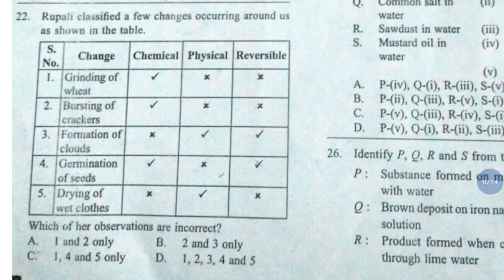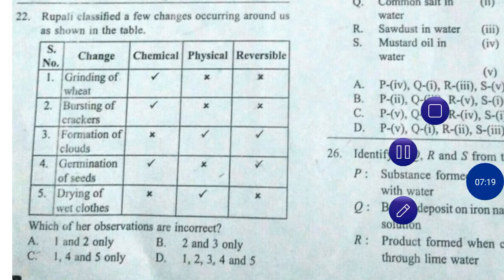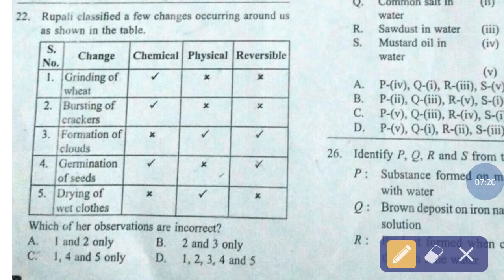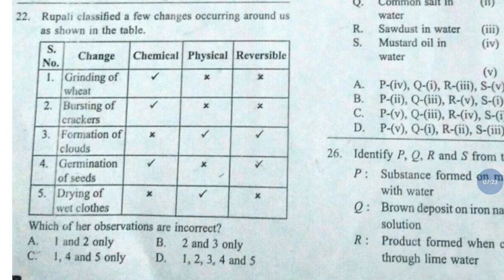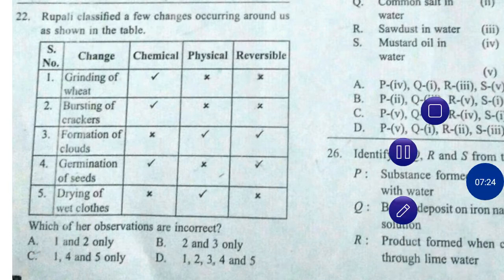Question number 22. Rupali classified a few changes occurring around us as shown in the table. Which of our observations are incorrect? The correct answer is option number C — one, four and five only.